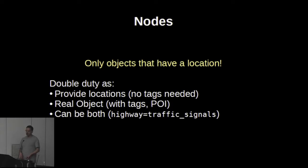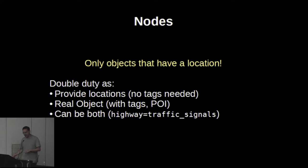Nodes are the only objects that have a location — a coordinate. That's very unusual. Most GIS systems in the world work differently, but for us nodes are what actually connects our data to the real world. They have a strange double duty: on the one hand, they provide the locations for mostly ways, but also a little bit for relations.